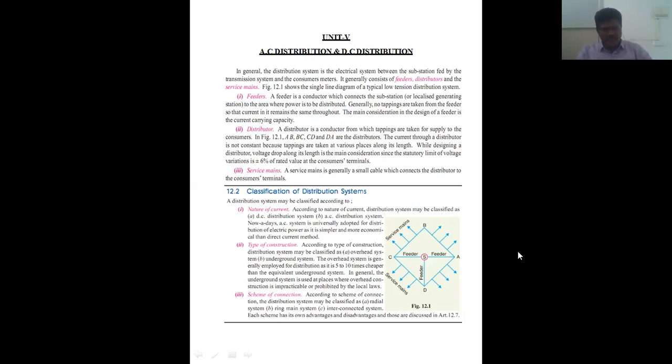The distribution system is classified according to nature of current. Nowadays, the AC system is universally used for electric power distribution as it is simpler and more economical than DC systems.